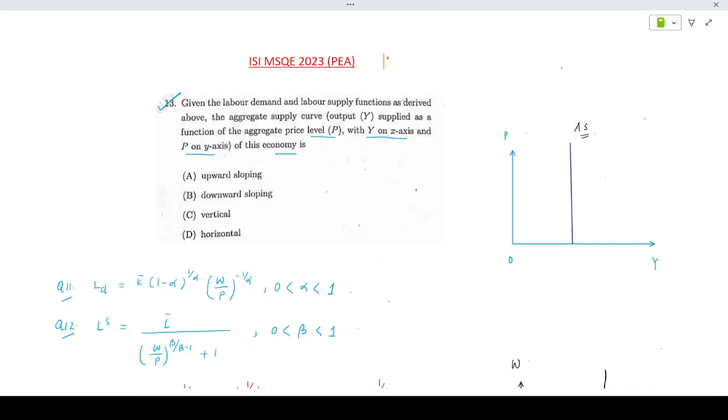So your correct option for this is option number C: the aggregate supply curve of this economy is vertical. Thank you.